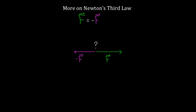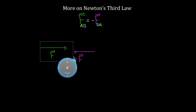The answer is no, and the reason is because these two forces are exerted on different objects. So you have to be careful. The reason this statement of Newton's third law is still a little too vague is because the forces are really on different objects. If this is the force on object A exerted by object B, then this force has to be the force on object B exerted by object A.